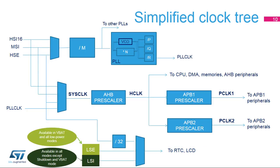The system clock can be derived from the high-speed internal 16 MHz RC oscillator (HSI-16), the multi-speed internal RC oscillator (MSI), or the high-speed external 4 to 48 MHz oscillator (HSE). The AHB clock, called HCLK, is derived by dividing the system clock by a programmable pre-scaler.